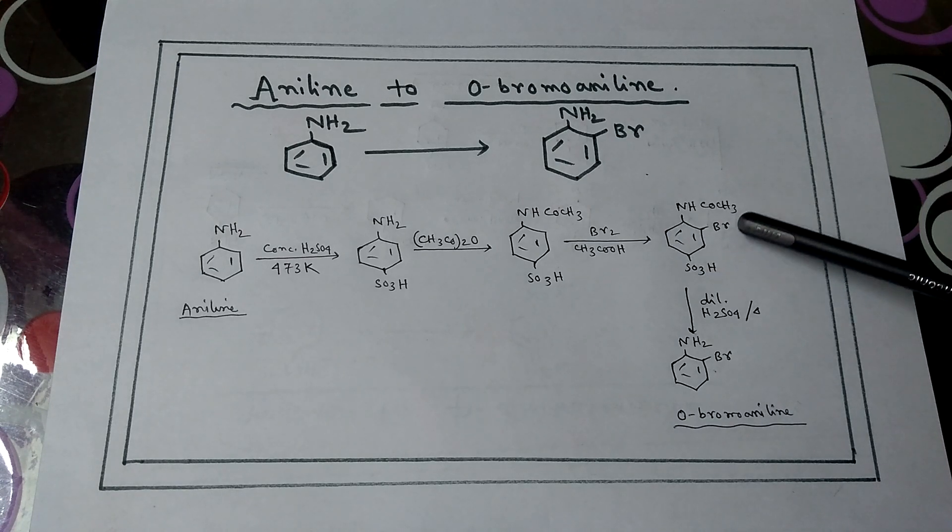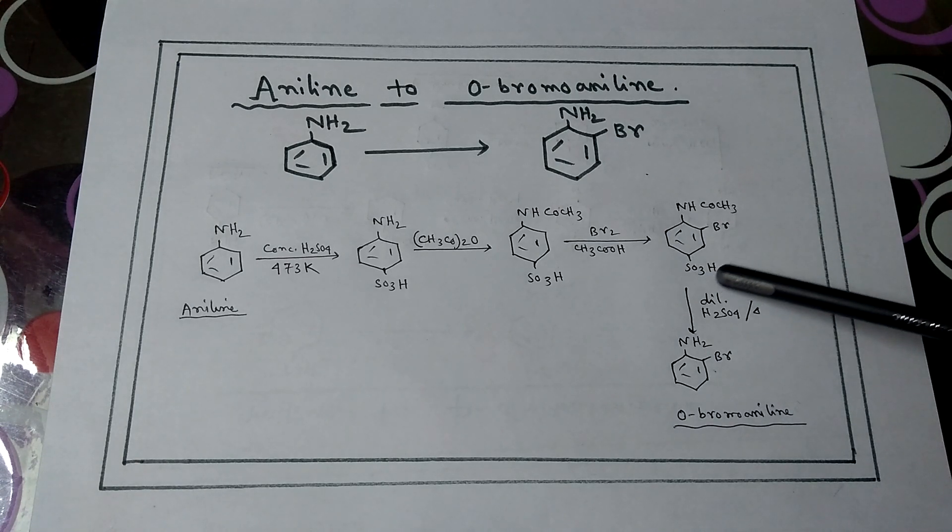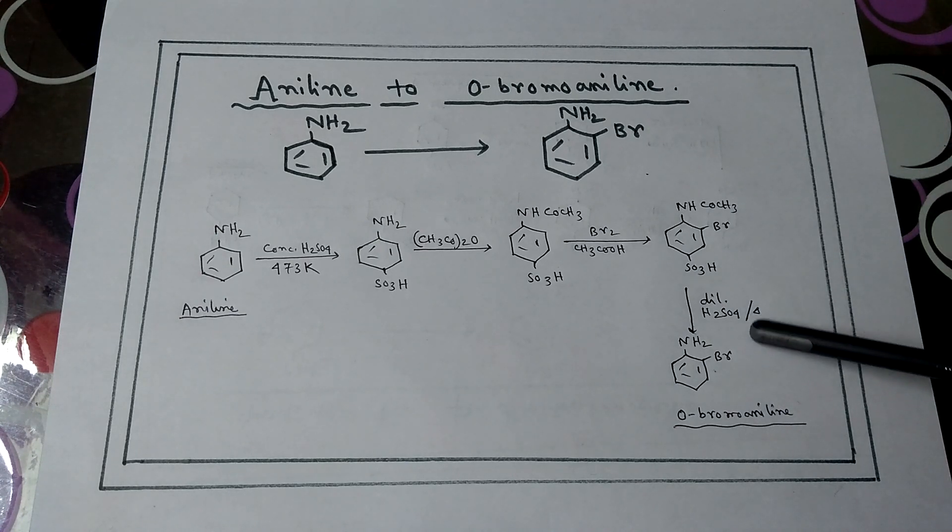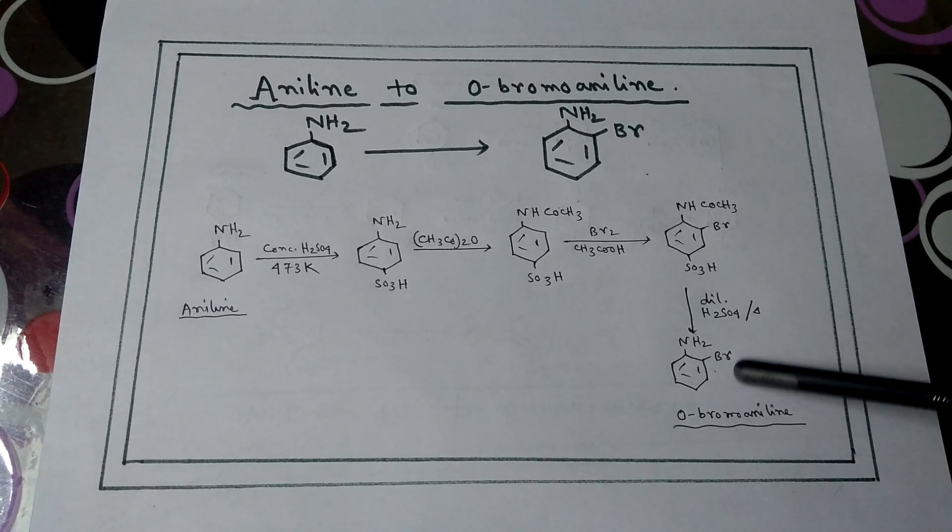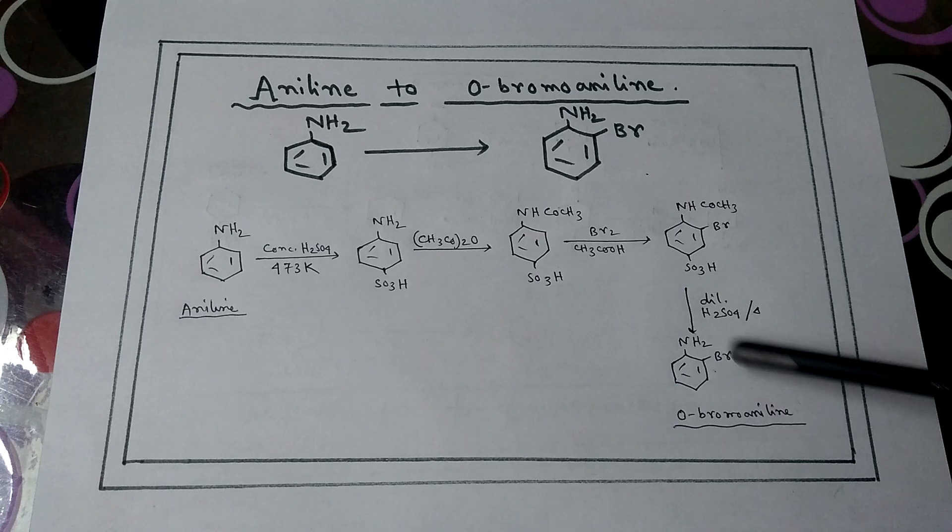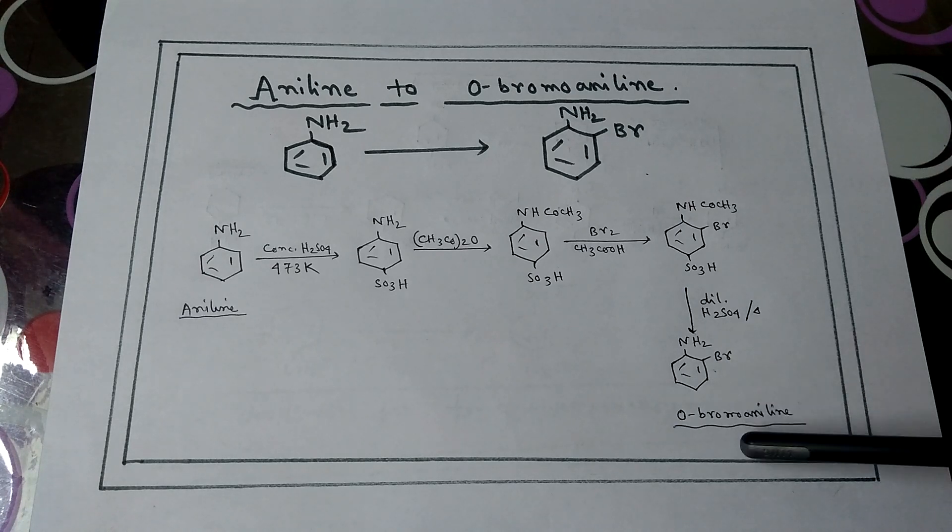This forms NHCOCH3 with bromine at ortho position and SO3H at para position. Then add dilute H2SO4 to remove the blocking groups and form the final product with ortho bromine.